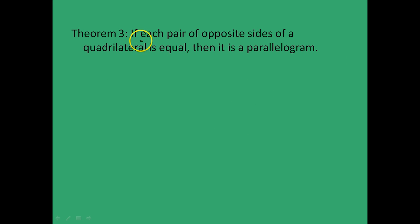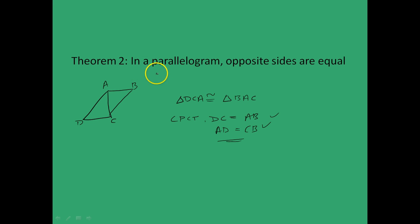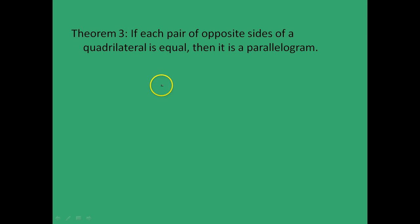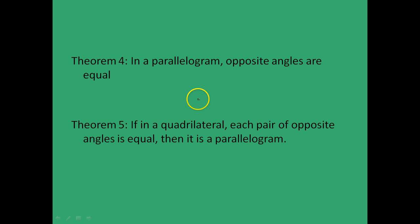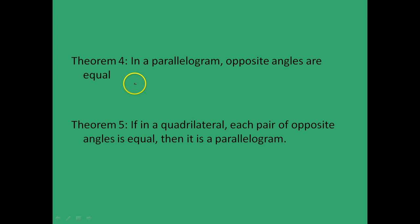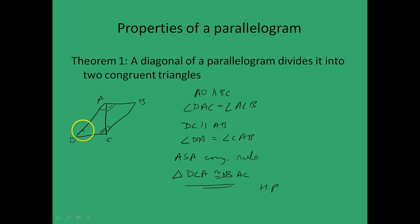Theorem 3 states: if each pair of opposite sides of a quadrilateral is equal, then it is a parallelogram. This is the converse of the previous theorem, and the proof is straightforward — you are invited to do this as an exercise. Theorem 4 states: in a parallelogram, opposite angles are equal. This theorem is also easy to prove by drawing the diagonal and considering congruent triangles.